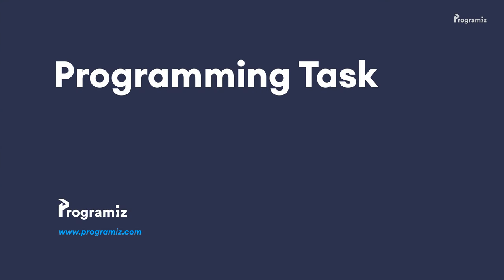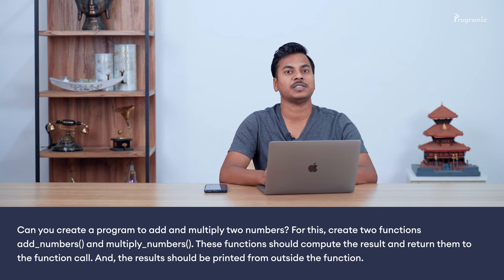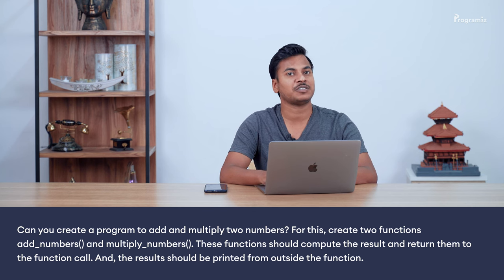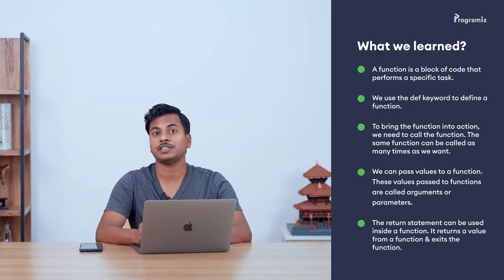Before we end this video, here's a programming task for you: can you create a program to add and multiply two numbers? Create two functions, add_numbers and multiply_numbers. These functions should compute the result and return them to the function call, and the results should be printed from outside the function. You'll find the answer in our GitHub repository. Now let's recap what we learned. A function is a block of code that performs a specific task. We use the def keyword to define a function. To bring the function into action, we need to call it. We can pass values to a function — these are called arguments or parameters. The return statement returns a value from a function and exits the function as well.